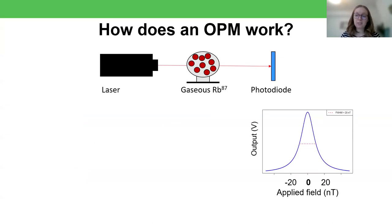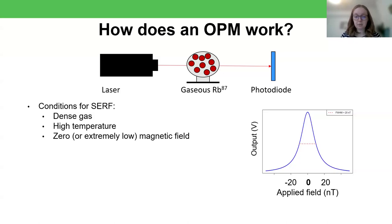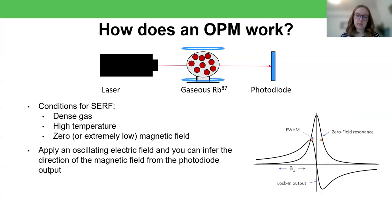So how does an OPM work? Well, this SURF regime sets some of the conditions for how we run our OPM system. So we need a dense gas at a high temperature and zero or extremely low magnetic field. The final part of how an OPM works is that we need a way of getting the direction of the magnetic field as well as its amplitude. So at the moment, say I recorded a voltage at this point here, I wouldn't know if that corresponded to a field of approximately minus 10 nanotesla or a field of 10 nanotesla. And that's not very helpful really when we need to know whether something is going in or out of the head. So the final thing we do is to apply an oscillating electric field around the gas, which effectively differentiates this curve so that we can infer the direction of magnetic field from the photodiode output, so long as we're working in this range before these turning points. And so now if I've got a field of minus 10 nanotesla, I can tell that it's minus 10 and not 10 nanotesla purely from the voltage.